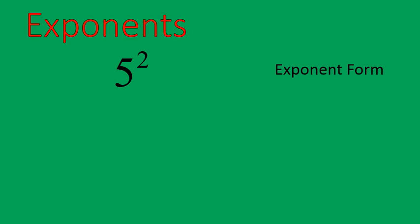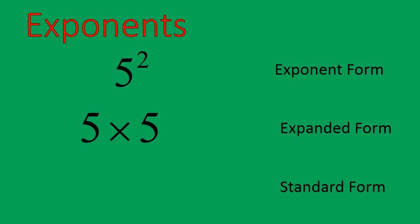5 squared. That's in exponent form. When we expand it out, it becomes 5 times 5, which is 25. So here are our three forms: exponent form, expanded form, standard form. That's how we solve an exponent. When you get quicker at it, you'll probably go straight from exponent form to standard form. But as you're learning about squaring, you probably want to write it out in the expanded form just to remind you what an exponent means.